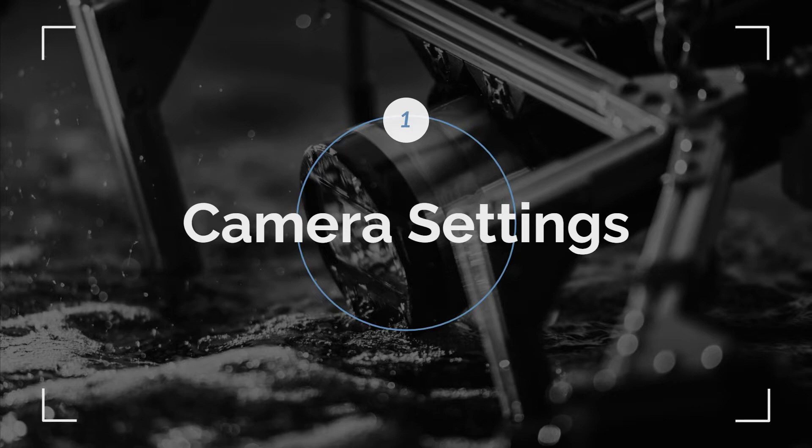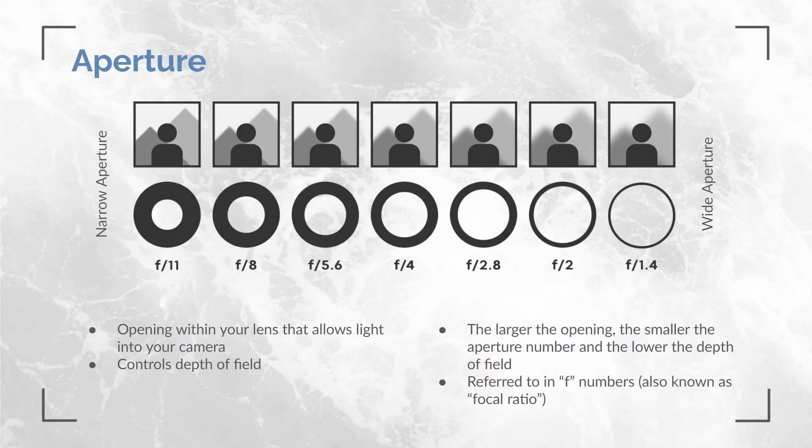So why are camera settings important to understand? In photography, the exposure triangle explains the relationship between shutter speed, ISO, and aperture. Whether you're shooting underwater or in air, these three factors are at the center of every exposure and resulting image. The three settings are linked, and changing one affects the others.